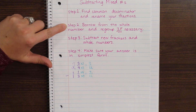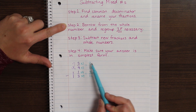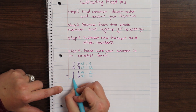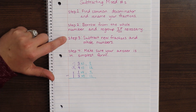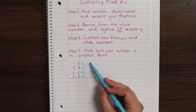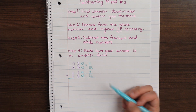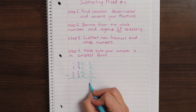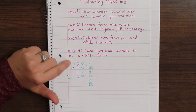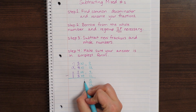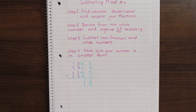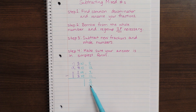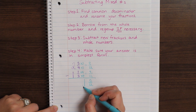Step two is not necessary because I can do nine subtract four. Moving to step three, I subtract my new fractions: nine minus four is five, and my denominator stays twelve. Subtracting my whole numbers, two minus one is one. Step four: checking simplest form — five-twelfths has only one as a common factor, so it's already in simplest form. I'm done.